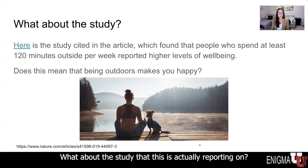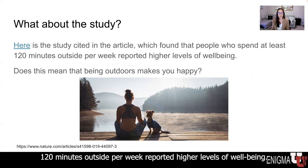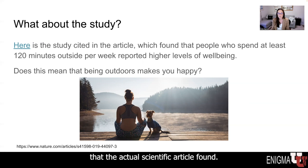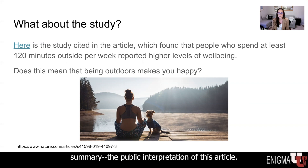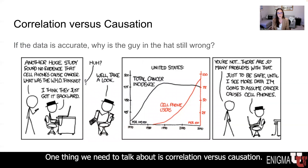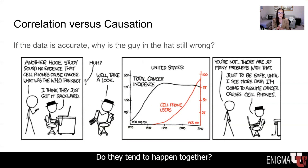What about the study that this article is actually reporting on? Here is a link to the actual article, which found that people who spend at least 120 minutes outside per week reported higher levels of well-being. Does this mean that being outdoors makes you happy? I'm not saying this is the message the actual scientific article found — this is just the lay summary, the public interpretation of this article. One of the things we need to talk about here is correlation versus causation.